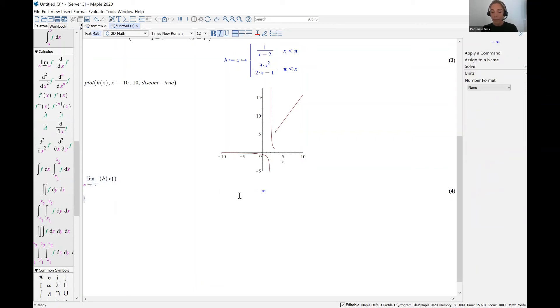Well, Maple tells us that the limit is negative infinity. And this is because as we march through those negative values and we approach x equals 2, the graph is dipping down and trending towards negative infinity.